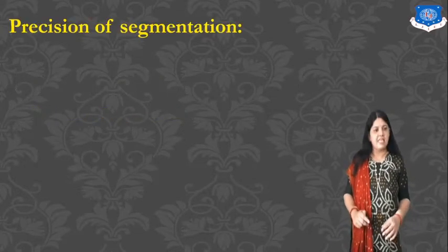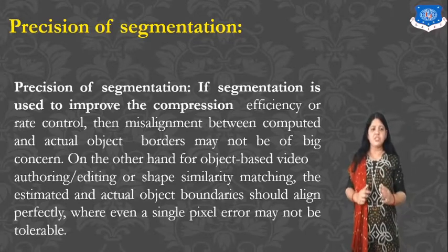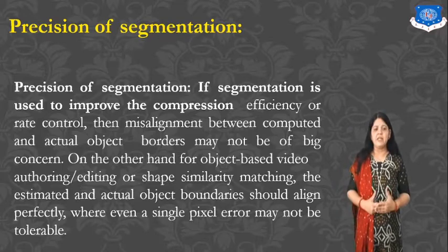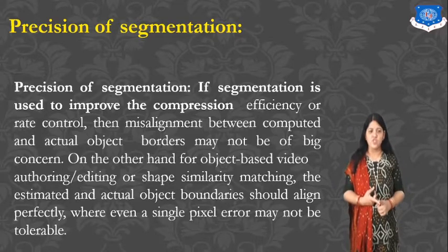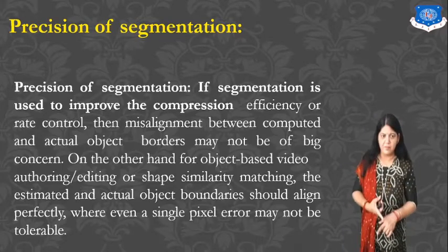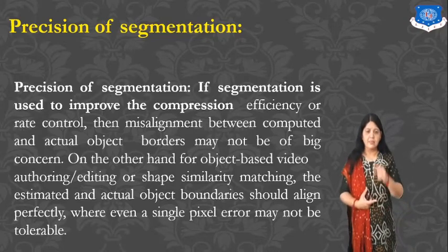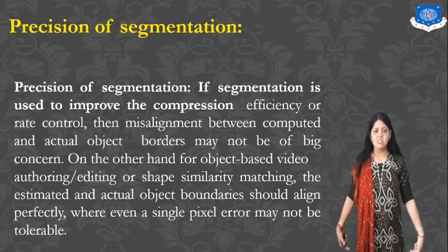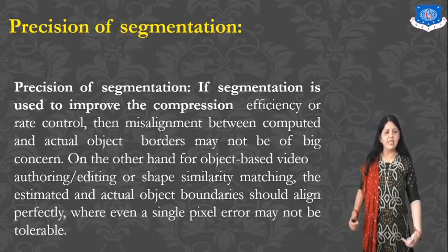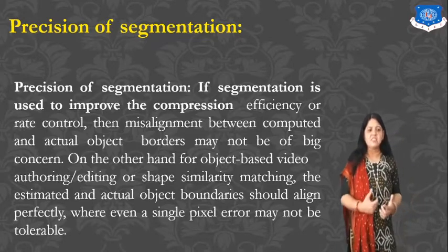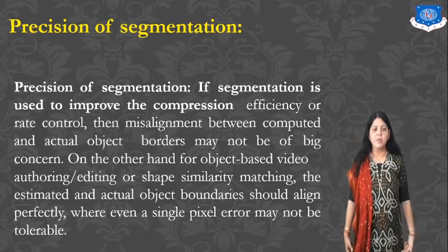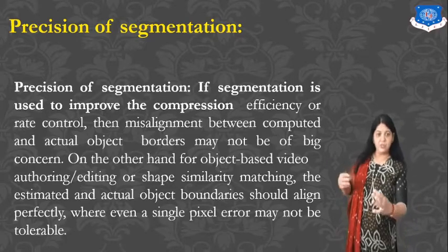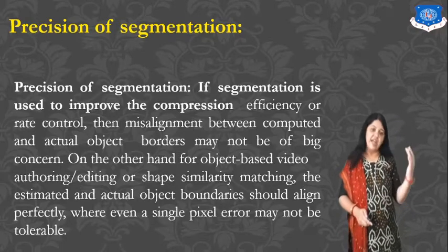The first factor is precision of segmentation. If the segmentation is used to improve compression efficiency or rate control, then misalignment between the computed and the actual object border may not be of big concern. However, in object-based video editing or shape similarity matching, the estimated and actual object boundaries should be aligned perfectly, where even a single pixel error may not be tolerable. You need to differentiate the object and the background.